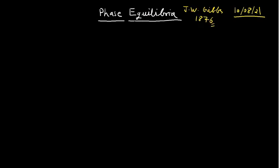It is a very old concept, but still very important for various applications in engineering also. The mathematical relation to relate the different parameters in the phase rule is: F equals C minus P plus 2. This is the mathematical equation known as the phase rule.